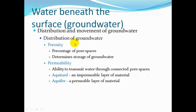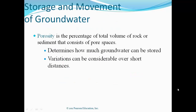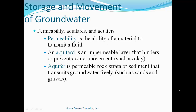Porosity is the percentage of pore spaces in the ground — it tells you how much storage potential there is for groundwater, and it's very variable, which makes it hard to get a good handle on how much groundwater really exists. Permeability is the ability of material to transmit fluid — for water to flow from pore space to pore space. An aquitard is an impermeable layer that hinders and prevents water movement, such as clay. An aquifer is permeable rock or sediment that transmits groundwater freely, such as sands and gravels.